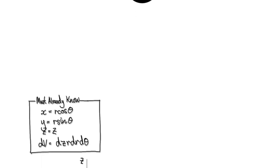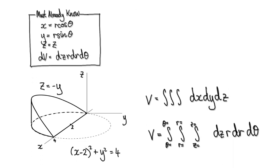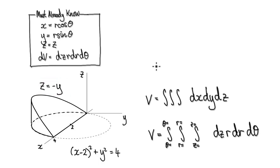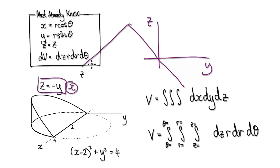Let's give you some practice. Use cylindrical coordinates to work out the volume of this wedge. You've got a plane here: z equals negative y. In your mind, picture the z-axis and y-axis. Z equals negative y looks like this. The absence of an x in an equation means you're going to get a trace parallel to the x-axis.